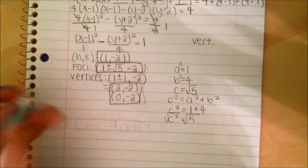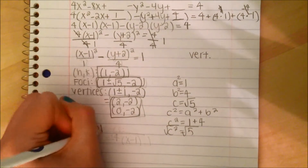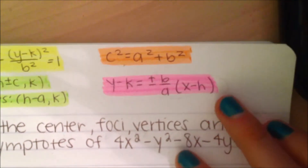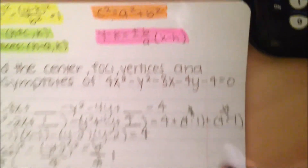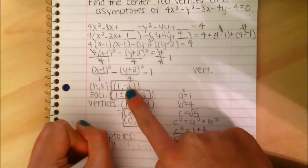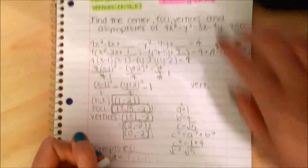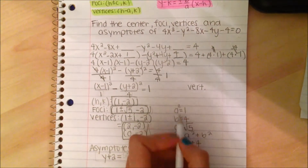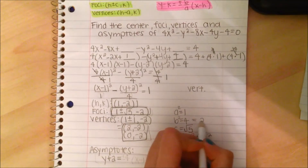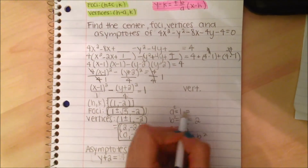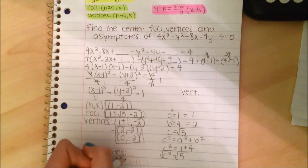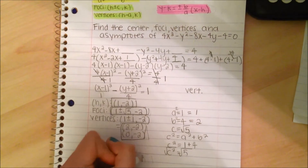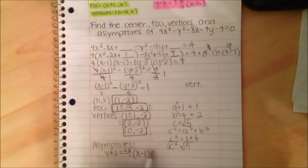Next we find the asymptotes. Using the vertical hyperbola asymptote formula, we plug in the numbers. y minus k equals plus or minus b over a times (x minus h). k is negative 2, so it becomes plus 2. b squared was 4, so b equals 2. a equals 1. So: y plus 2 equals plus or minus 2 times (x minus 1).